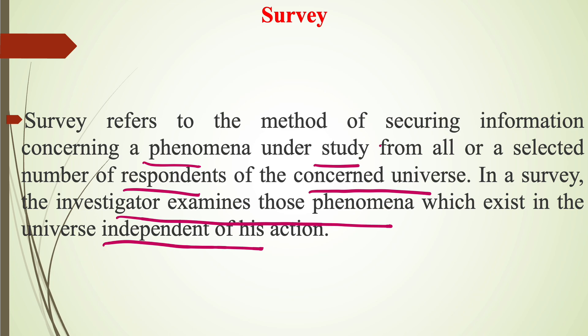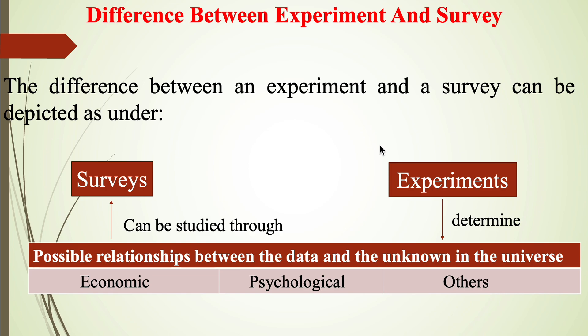Now we come to the difference between experiment and survey, which can be depicted as in the diagram. The survey can be used to study possible relationships between data and the unknown in the universe — the unknowns may be economic, psychological, and others. Whereas experiments determine possible relationships between the data and the unknown in the universe, which also includes economic, psychological, and others.